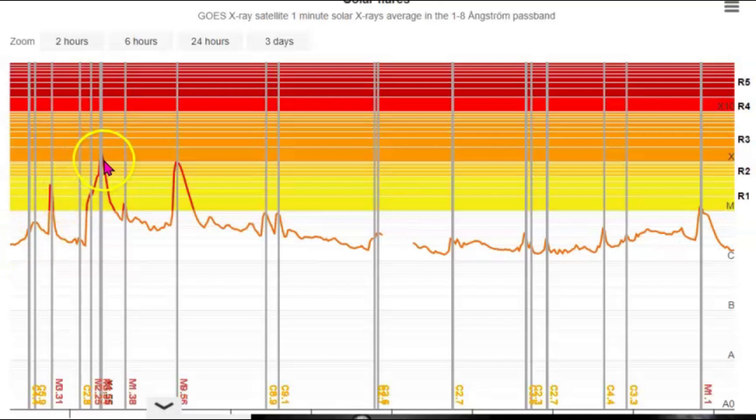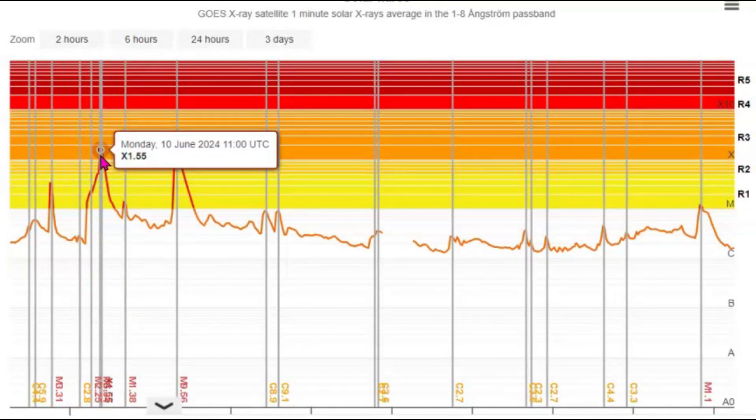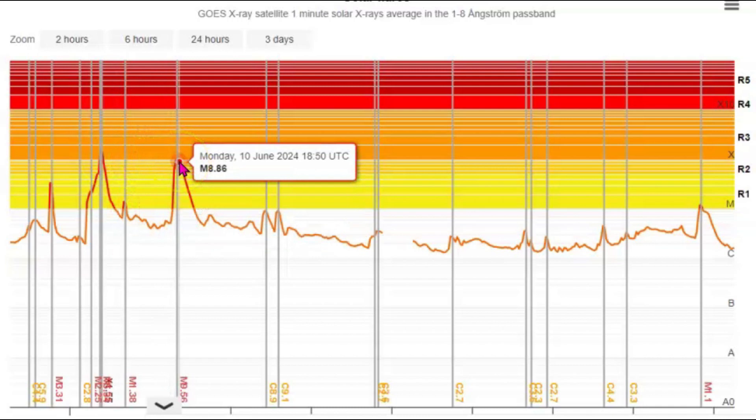So we had, let's see, an X class, if I can get it to work, 1.55. And then there was another one that looks like it's been downgraded to an M886.